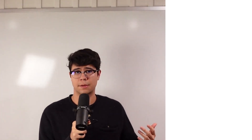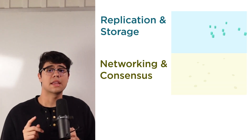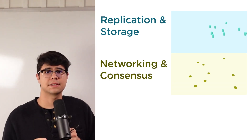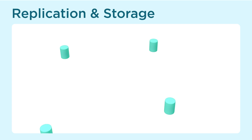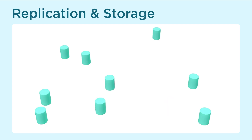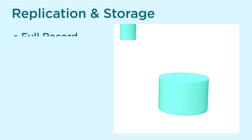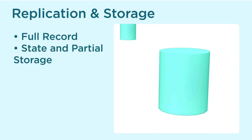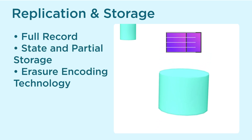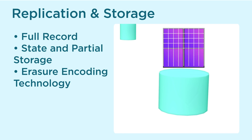To create a data availability layer in a blockchain system there are several requirements. Here are the big ones: replication and storage, networking and consensus, and incentivization. Replication and storage is how many computers — aka nodes — are in your blockchain. There are different replication mechanisms: some are as simple as keeping a full record of the data, some only require state and partial storage, and some include erasure coding technology like in Celestia, which I'll talk about later.